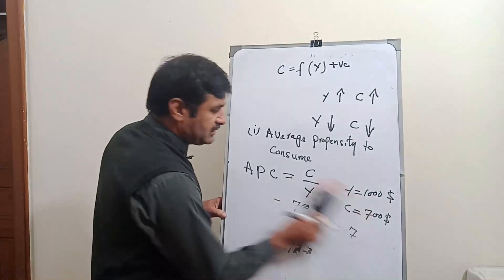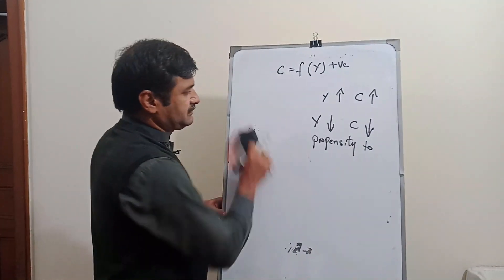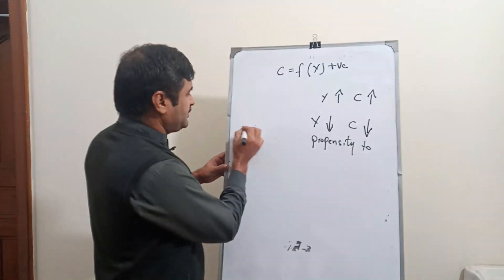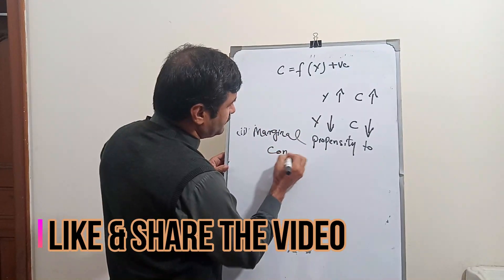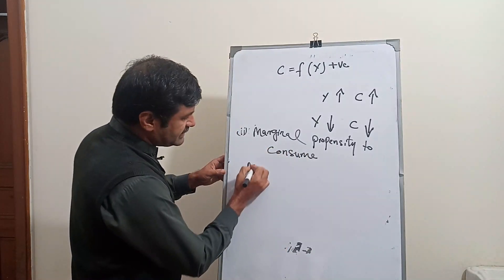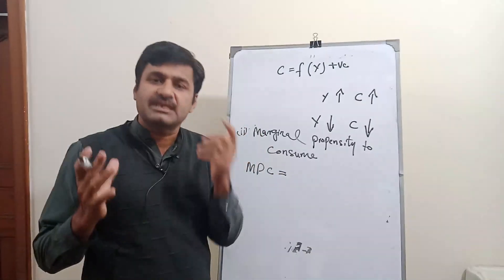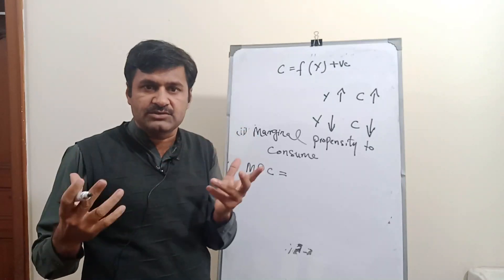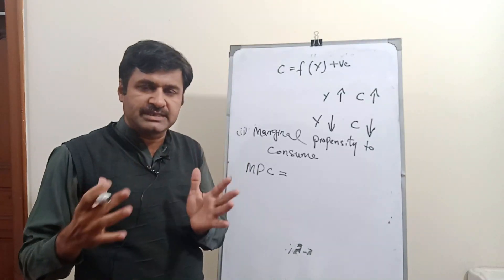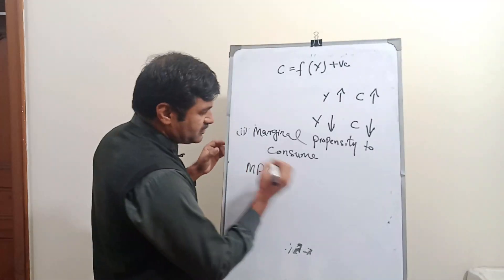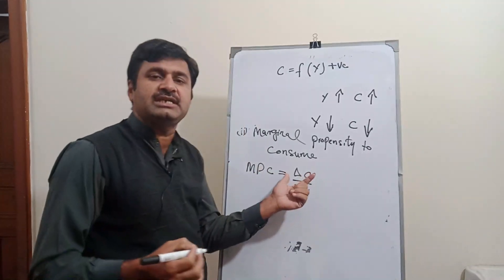Now we find the marginal propensity to consume. Marginal propensity to consume is denoted as MPC. The definition is: change in consumption due to change in income is called marginal propensity to consume. The formula is delta C over delta Y, where delta C is change in consumption and delta Y is change in income.